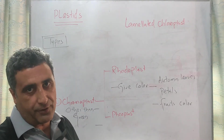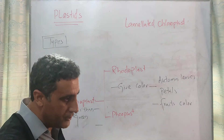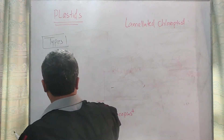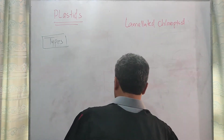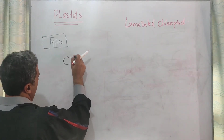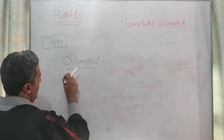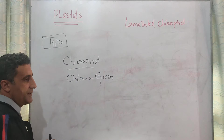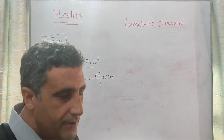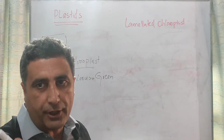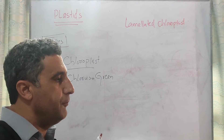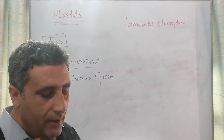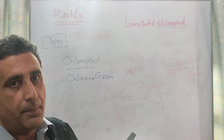The third type is chloroplasts. Chloroplasts are the important type and we will discuss the structure of it. As the name indicates, 'chloro' means green, and 'plast' means form. Chloroplasts are present in all eukaryotic cells — meaning all plant cells possess chloroplasts. So they are green.